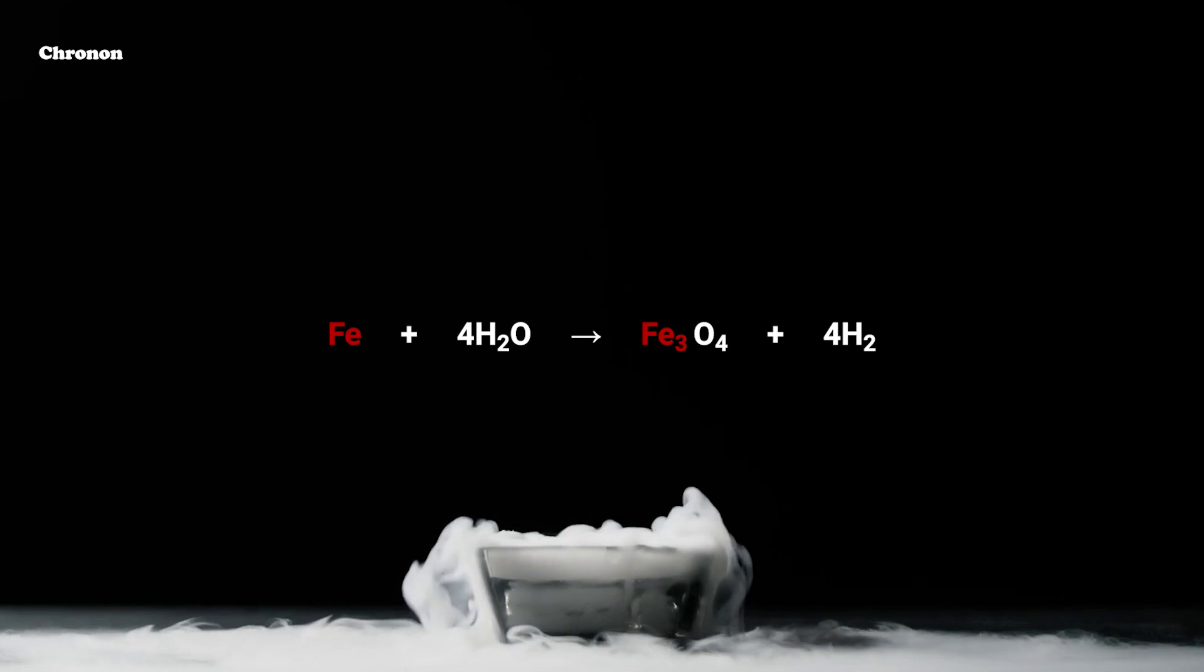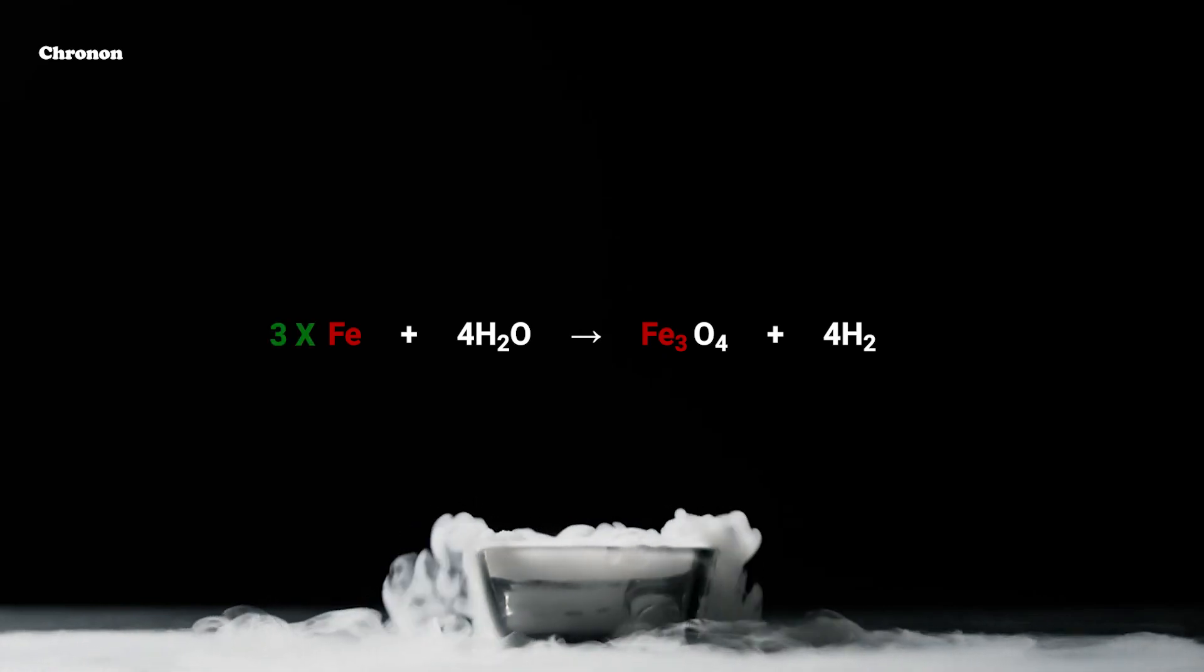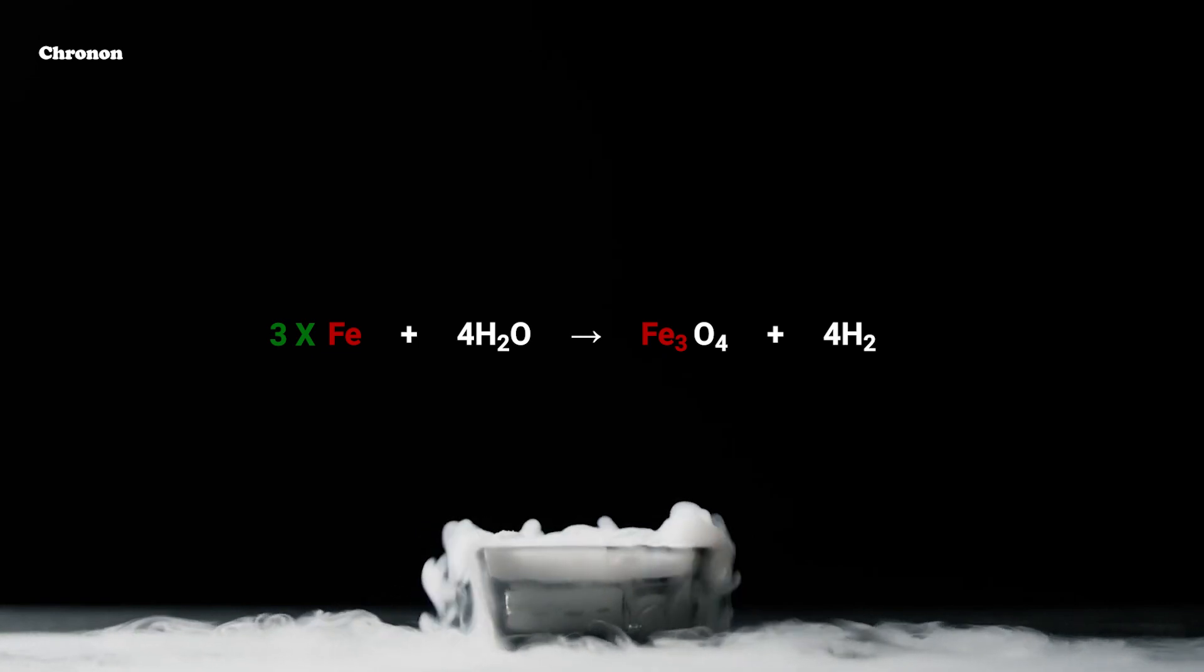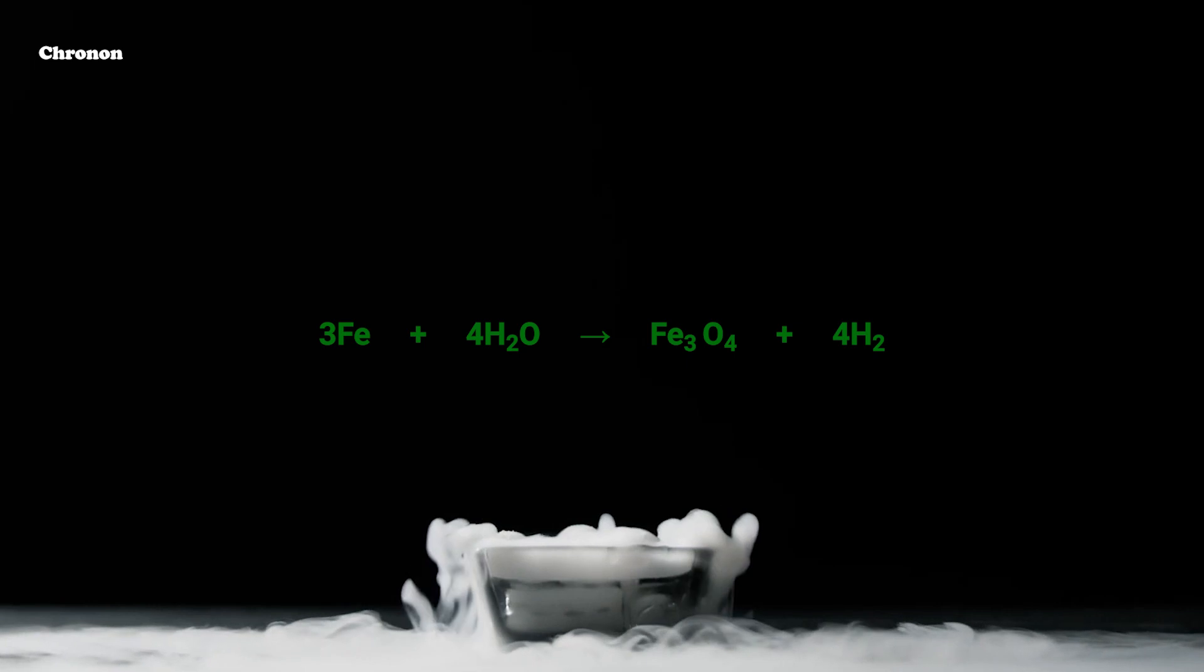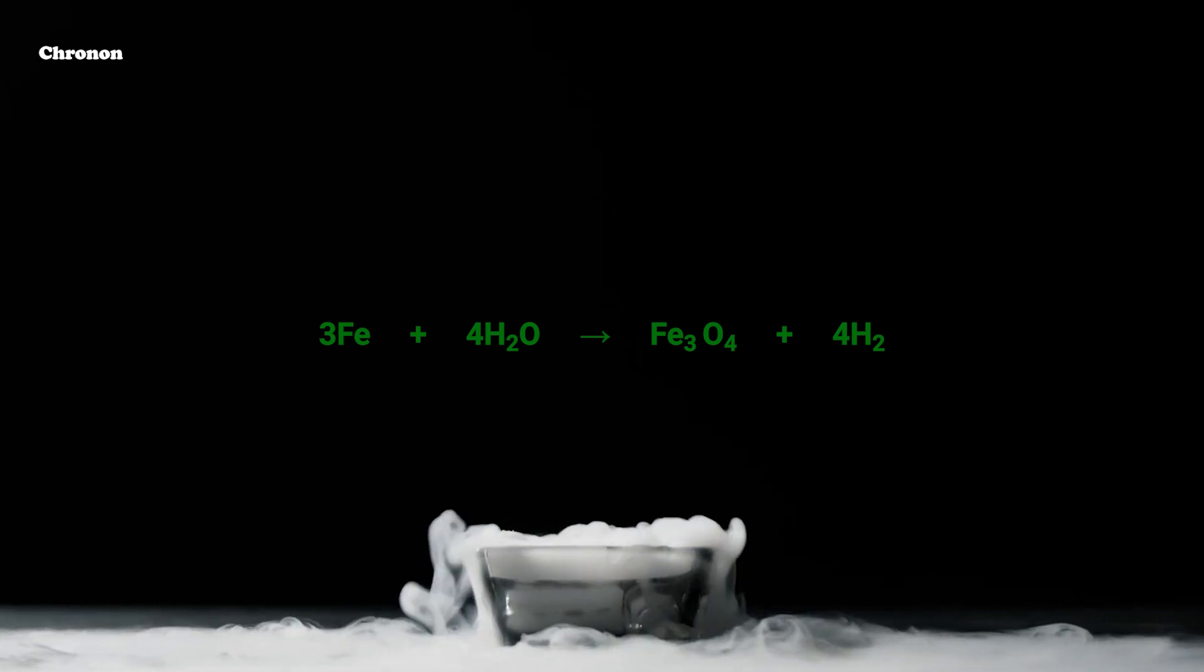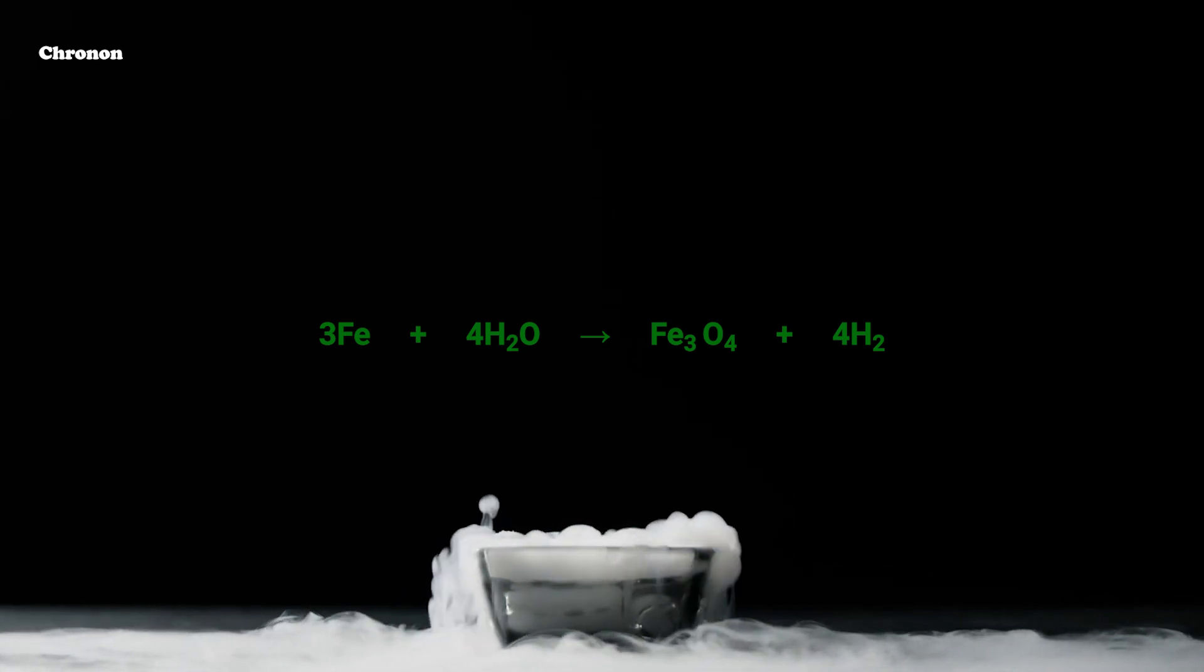To equalize iron atom in this equation, we have to raise the iron atom by 3 on the left hand side. After raising the iron atom by 3 on the left hand side, the equation will be 3Fe plus 4H2O producing Fe3O4 plus 4H2.